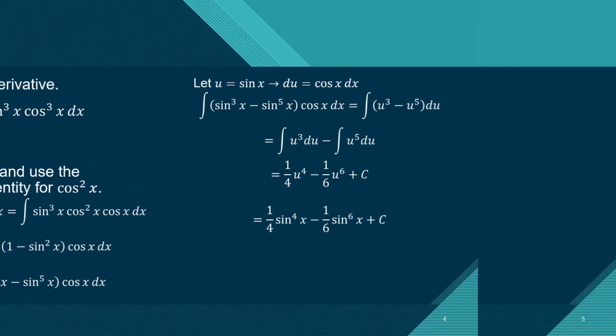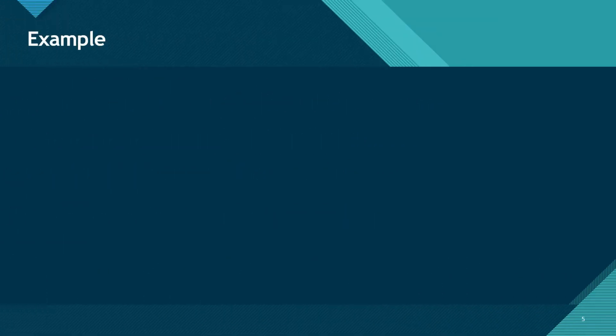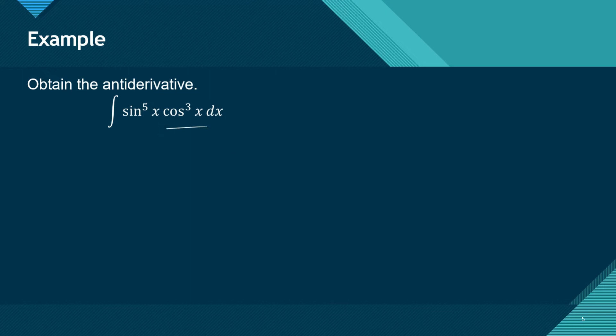Now let's obtain another antiderivative. We can use the same solution — we can factor out one cosine from this expression and repeat what we did in the previous example. That should be the easier route to solve this problem, but let us take the more difficult path.